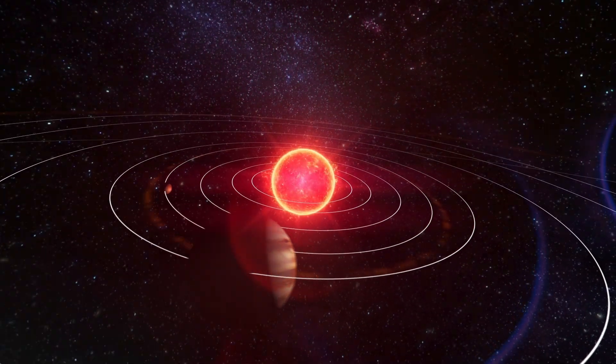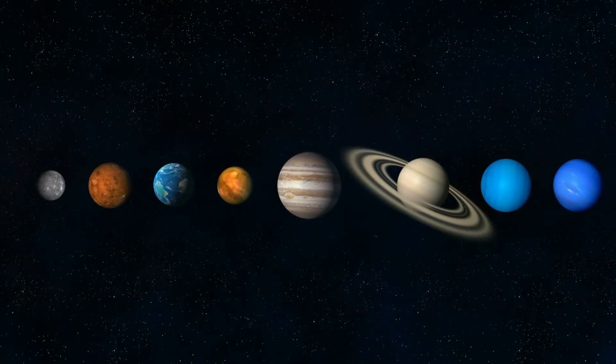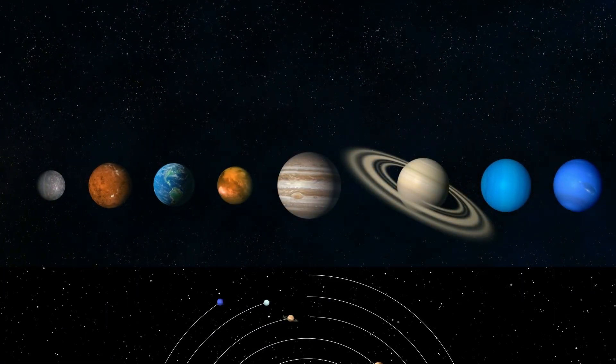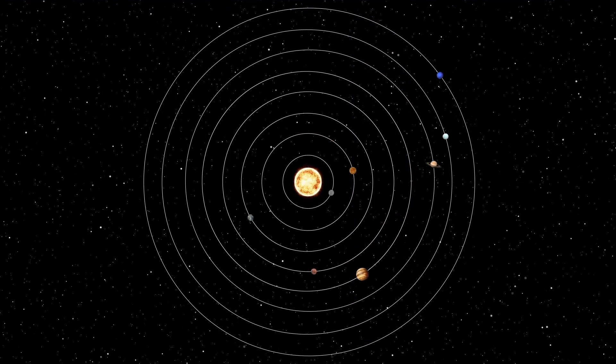At this point in history, we're all expected to have a rudimentary understanding of the elements of our solar system. For instance, it's common knowledge that there are eight planets that both rotate around their own axes and revolve around the Sun in their own orbits.